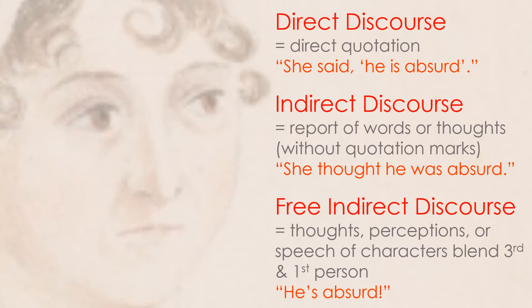Then we have free indirect discourse. It's like indirect discourse but, as the name suggests, even looser — it moves around even more. It presents the thoughts, perceptions, or speech of characters in a blend of third person narrative and first person. For example: 'he's absurd.' Just those two words — it's very unclear whose perspective is being told. If you saw that in a novel, you wouldn't know if it was the perspective of the narrative voice or of one of the characters.